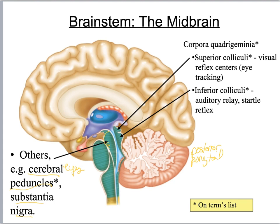On the posterior I have this thing that looks like camel bumps. The back bump is the superior colliculus — colliculi is plural, colliculus is singular. All you need to know: reflex visual and eye tracking. And then you've got the inferior colliculus which is for auditory and startle reflex.